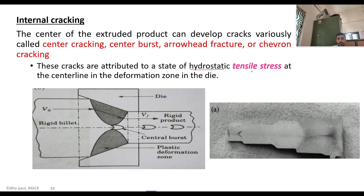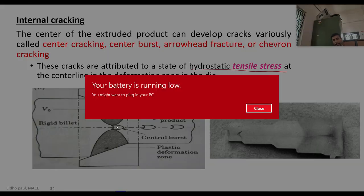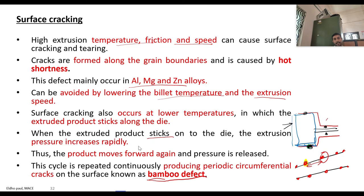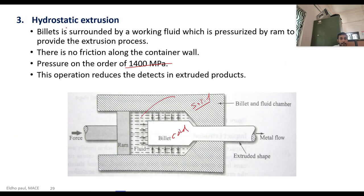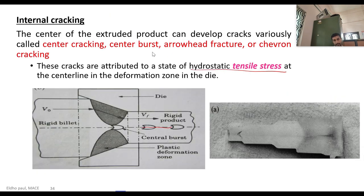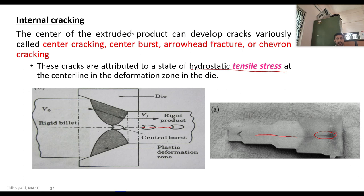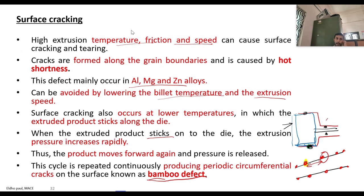The third defect is internal cracking, produced due to hydrostatic tensile stresses developed at the center region of the extruded product. As material deforms through the die, the center region is subjected to hydrostatic tensile stress, which develops cracks at the center. Factors such as die angle, friction, and extrusion ratio affect this internal cracking. These are the three main defects in extrusion: surface cracking, pipe defect, and internal cracking.